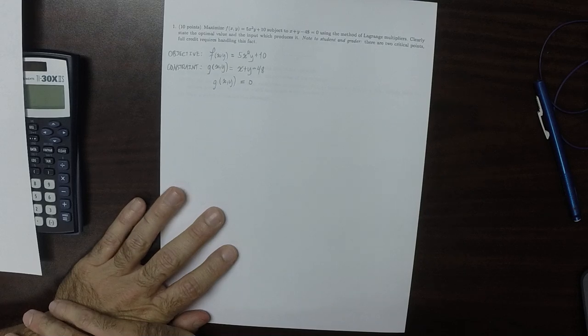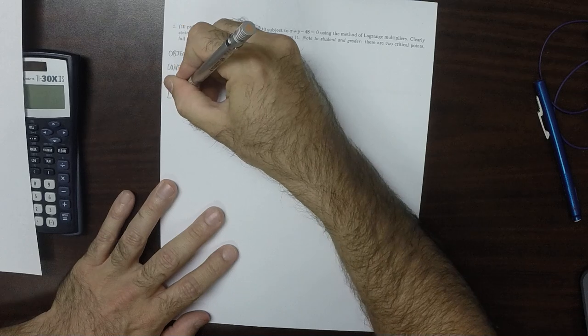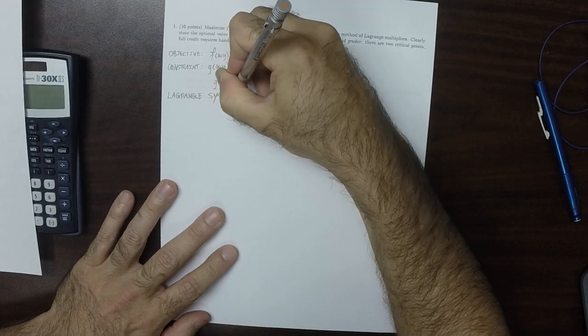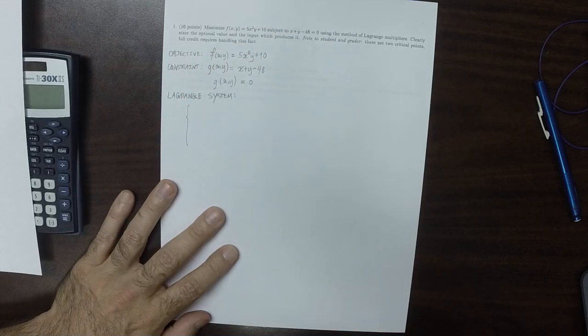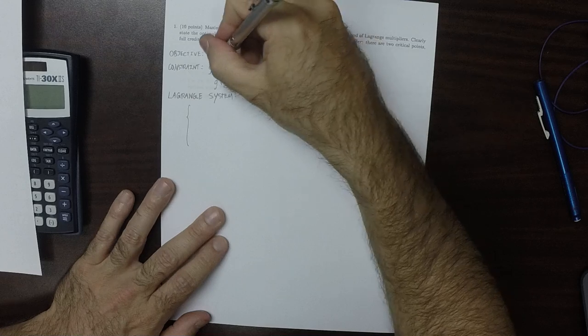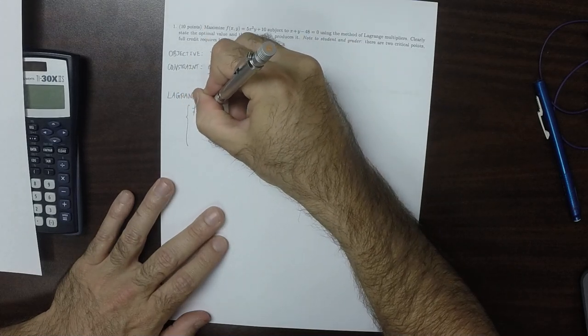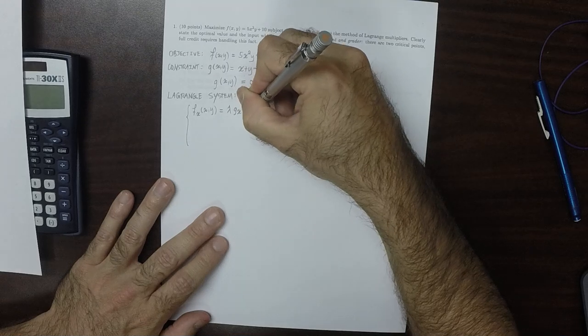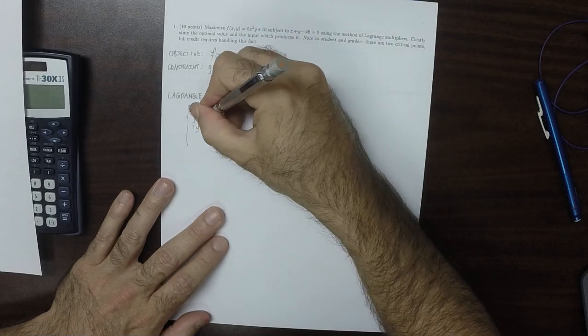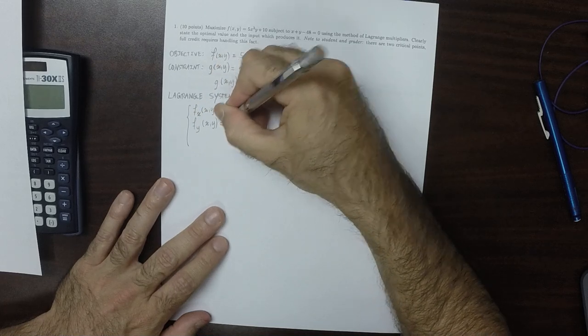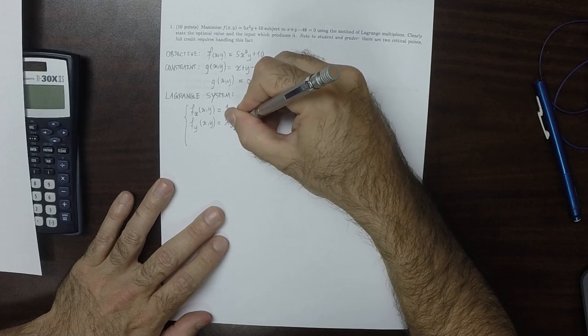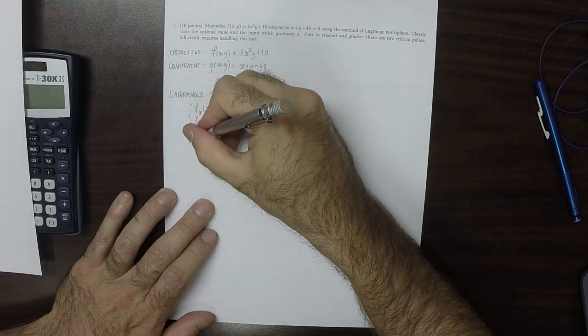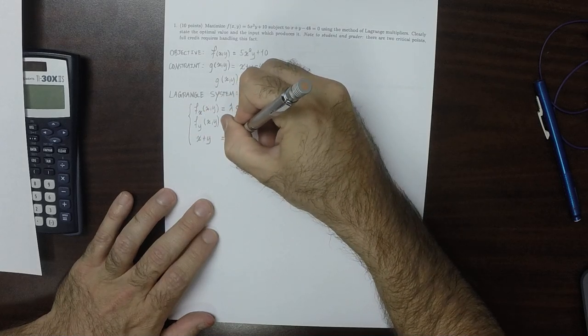So the Lagrange system is three equations. We need the x partial of the objective to be lambda times the x partial of the constraint. We need the y partial of the objective to be the same lambda times the y partial of the constraint. And furthermore we need the constraint to be true, so we need x plus y is 48.